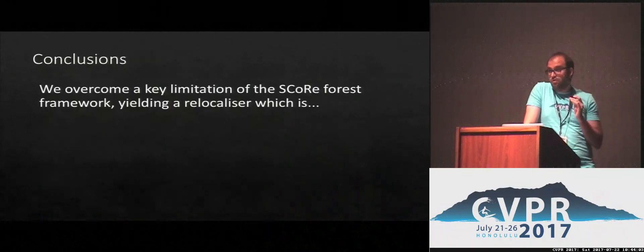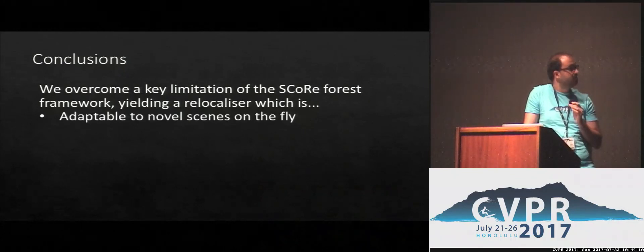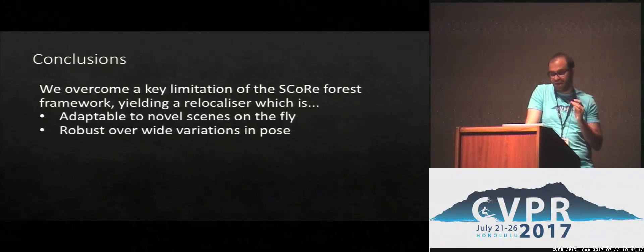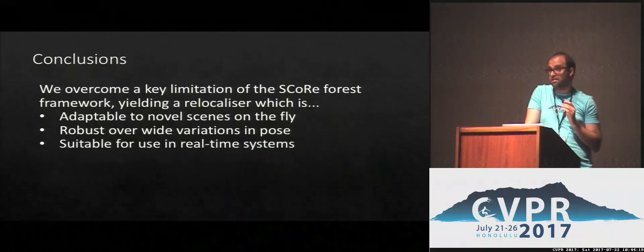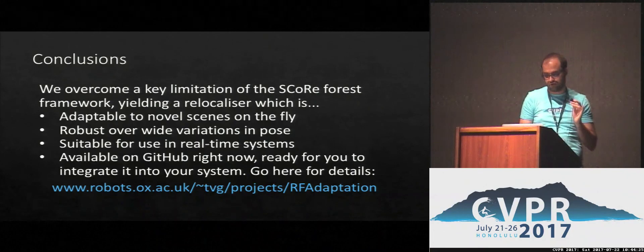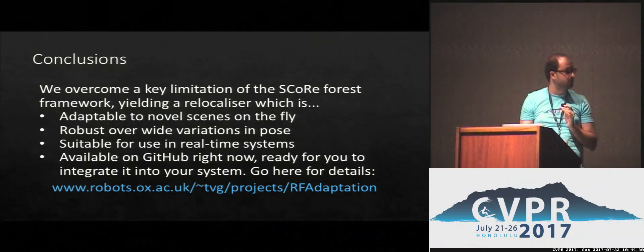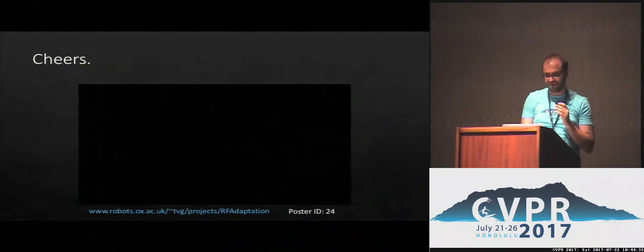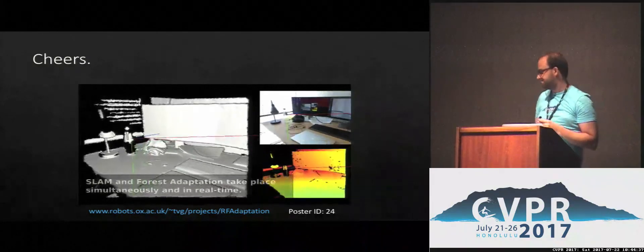In conclusion, we proposed a simple but effective modification to the SCORE forest training which yields a relocalizer that tailors itself to new scenes on the fly, is powerful — being able to relocalize from a variety of novel poses — is fast, allowing integration with real-time systems, and last but not least, is available right now. The source code is available on GitHub, ready to be integrated into your system. You can visit our project page for details. Thank you very much.